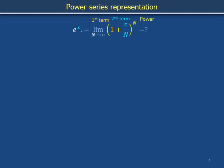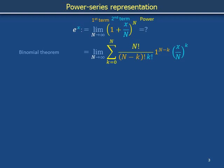Recall that the binomial theorem relates such an expression to a sum from k equals 0 to n of n factorial over n minus k factorial k factorial, multiplied by the first term, meaning 1, taken to the n minus kth power, multiplied by the second term, meaning x over n, taken to the kth power.